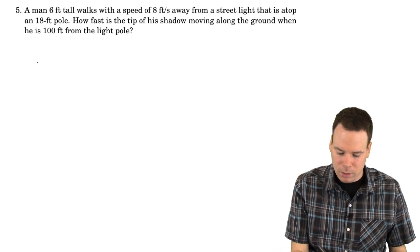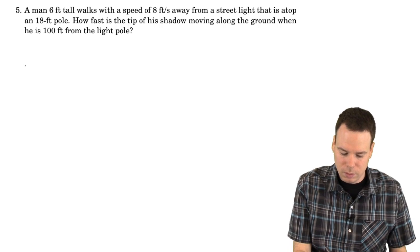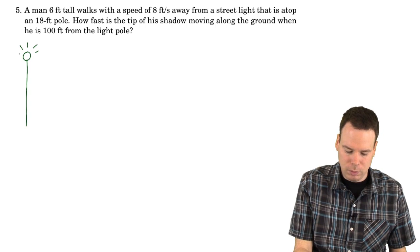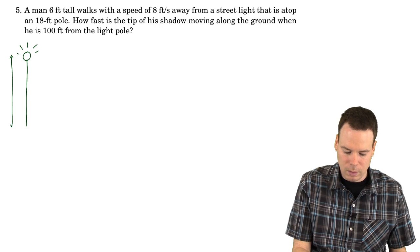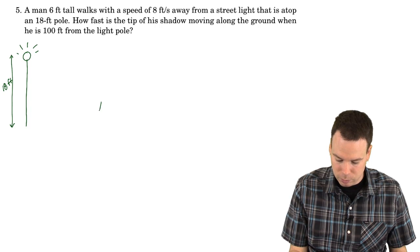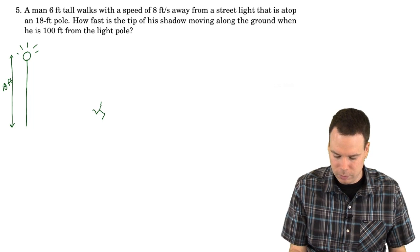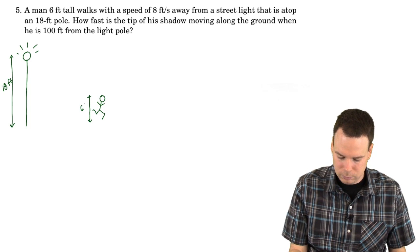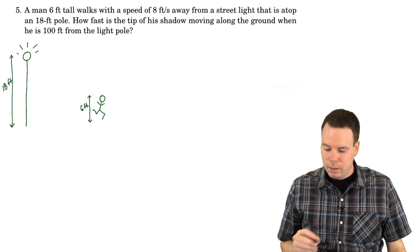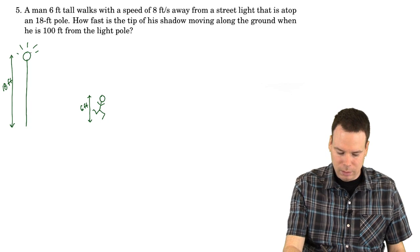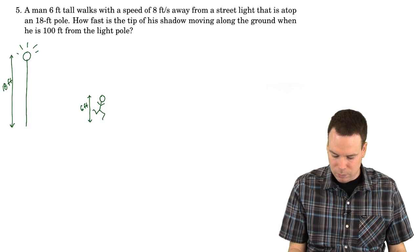We need to get an idea of what's going on here, so we'll start by sketching a diagram. We've got a light post with a little light on top — that's 18 feet tall. There's a man walking away from the light post, and the man is 6 feet tall. Since the light is behind the man, a shadow is cast on the ground in front of him.